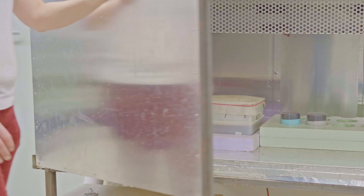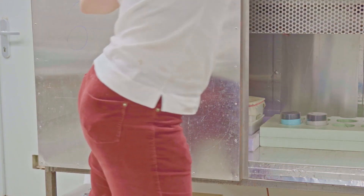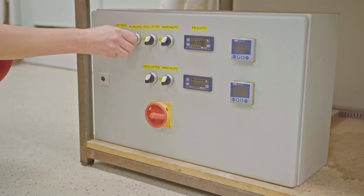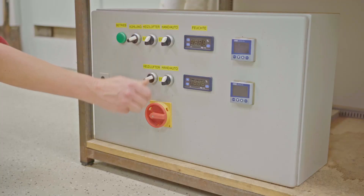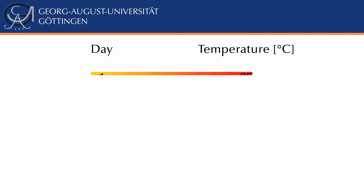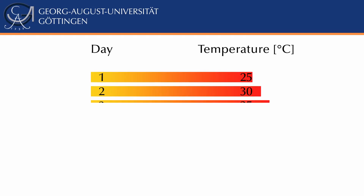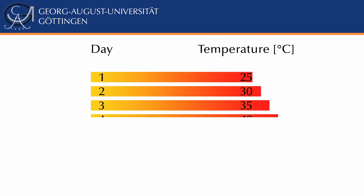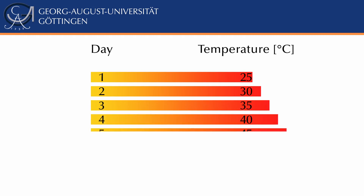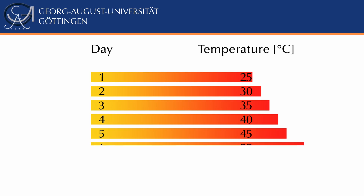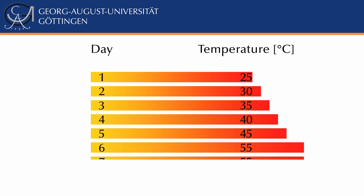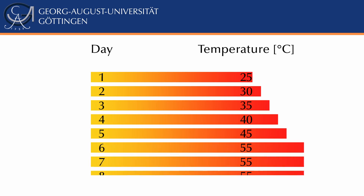It will take several days to extract animals from samples of this size. We constantly increase the temperature in these cabinets, starting with 25°C on day one and increasing the temperature by 5°C every day for one week. It is important to take enough time for soil animal extraction. If temperatures are too high at the beginning and the soil samples dry quickly, many animals do not have enough time to move away from the heat and drought, and die without having a chance to drop into the liquid below.